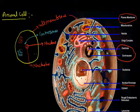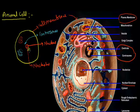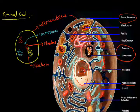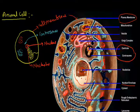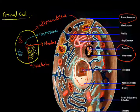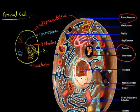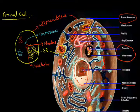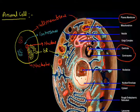Another important structure in the cell is the endoplasmic reticulum. This membranous structure is known as the endoplasmic reticulum, or ER. It is of two types in the animal cell as well as the plant cell. If it has ribosomes, we call it the rough endoplasmic reticulum. If it has no ribosomes, we call it the smooth endoplasmic reticulum.